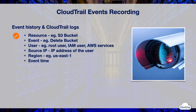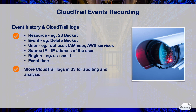CloudTrail can record account-level activities into CloudTrail events. Each event contains resource information, event name, user information, source IP of the user, AWS region and event time. For instance, if someone has deleted an S3 bucket, CloudTrail events can show you the activity detail such as the name of the S3 bucket, the user that deleted it, the source IP of the user, the AWS region of the bucket and when the action was taken.